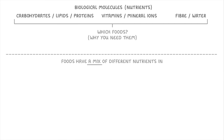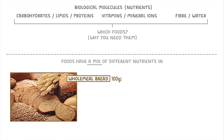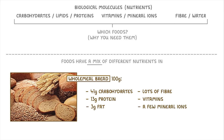that foods normally have a mix of different nutrients in them, not just one. For example, 100 grams of wholemeal bread, which contains about 250 calories — so one eighth of your daily energy requirements — contains about 41 grams of carbohydrates, 13 grams of protein and 3 grams of fat, as well as lots of fiber, a couple of vitamins and a few mineral ions. So even though in this video we'll say which foods are a good source of each nutrient, remember that there's a lot of overlap and almost all foods contain a mix.